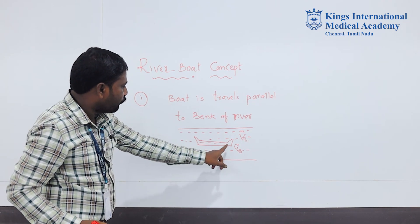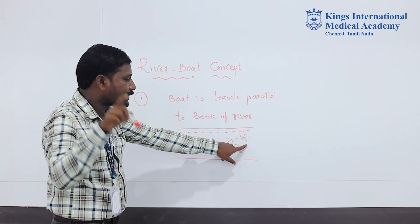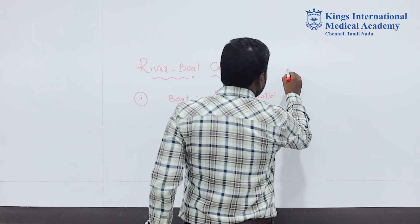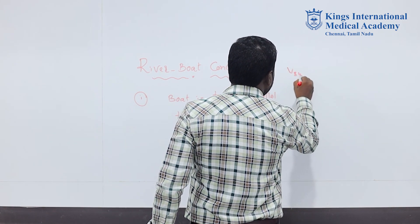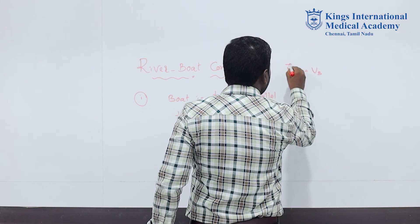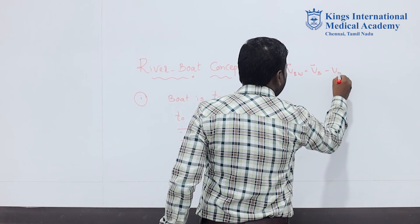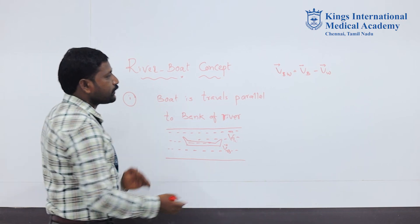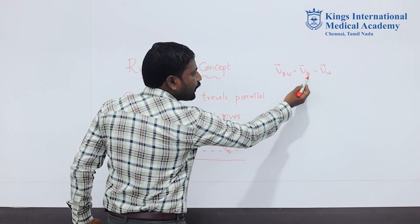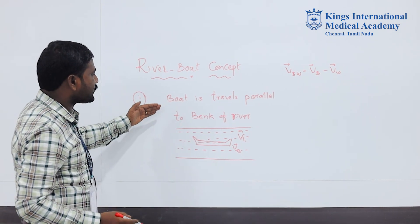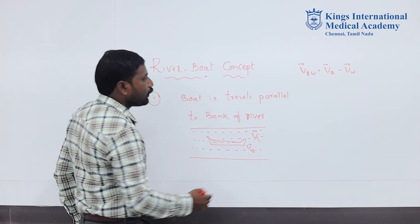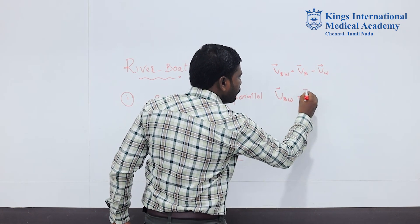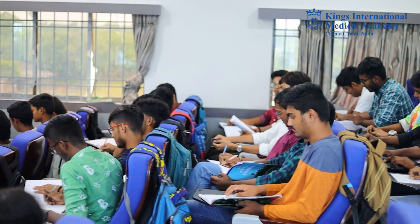Don't confuse the notation: VW bar means velocity of water and VB bar means velocity of boat. According to relative velocity, VBW bar equals VB bar minus VW bar. But when the boat is traveling parallel to the bank of the river, we take VBW bar as VB bar plus VW bar.